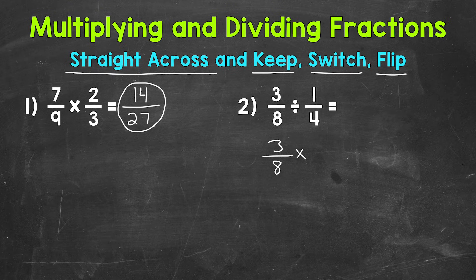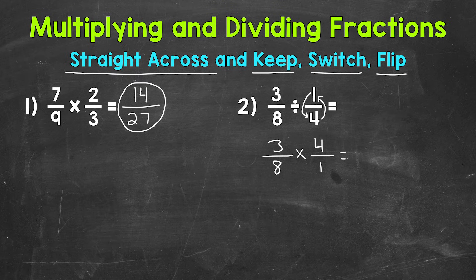This is called the reciprocal. So the four is going to be our numerator now, and the one is going to be our denominator. So we flipped that second fraction. Now we can multiply straight across. Three times four is 12. Eight times one is eight.